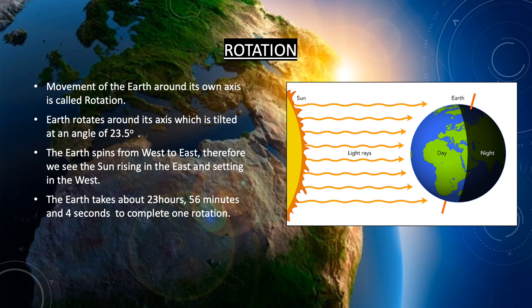Earth ke rotation ki jo direction hai woh west se leke east ki torf hai. Aur yahi ek reason hai ki jab sun rise hota hai to hume east ki torf nazar aata hai, aur jab set hota hai to hume west ki torf nazar aata hai.